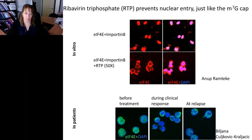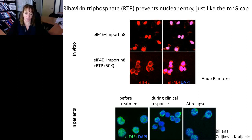Because ribavirin triphosphate binds in the same spot as the cap on 4E and causes similar allosteric structural changes on the surface of 4E, we asked whether ribavirin impedes nuclear import and whether this could explain the phenotypes we're seeing in patients. In our control assay with importin-8, we see 4E enter the nucleus. However, if we add a 50-fold excess of ribavirin triphosphate, 4E entry is impaired. Below, for comparison, are the patient micrographs showing what clinical response we observe — very similar to what you see when you add excess RTP.